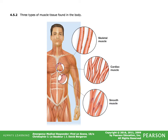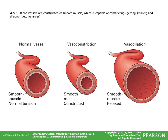There are three types of muscle tissue. Skeletal muscle is voluntary — it's well organized in appearance. Cardiac muscle is involuntary — it beats on its own. Smooth muscle is also largely involuntary. Blood vessels are constructed of smooth muscle, which is capable of constricting and dilating.